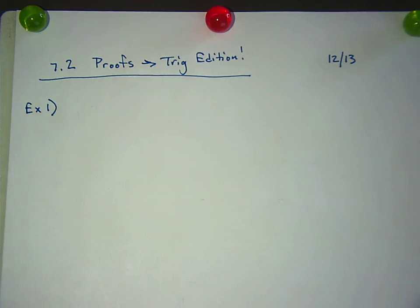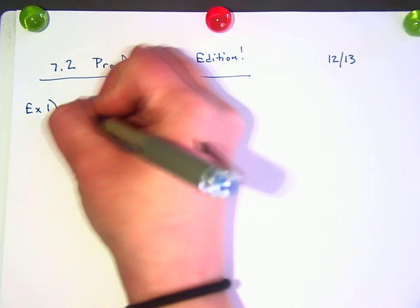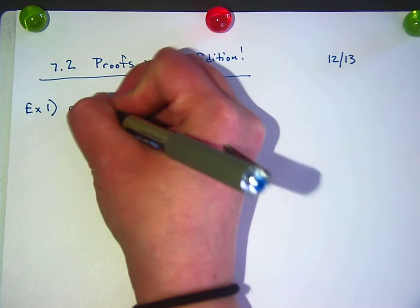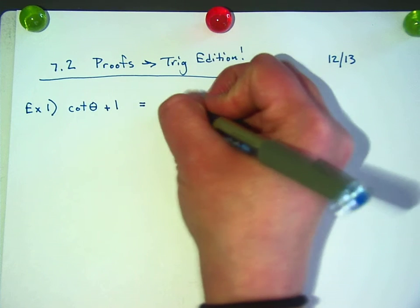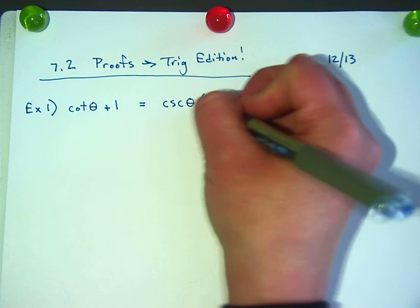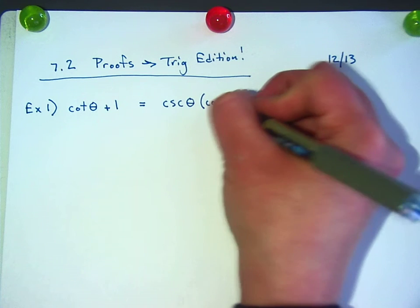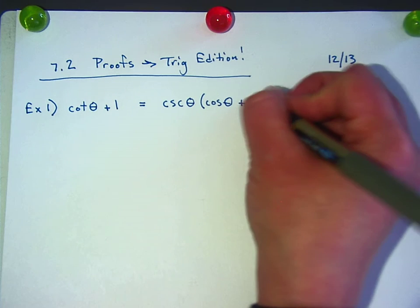All right, example one. Your job is going to be to prove that these are the same thing. And here's how proofs work. A proof is not like an equation.